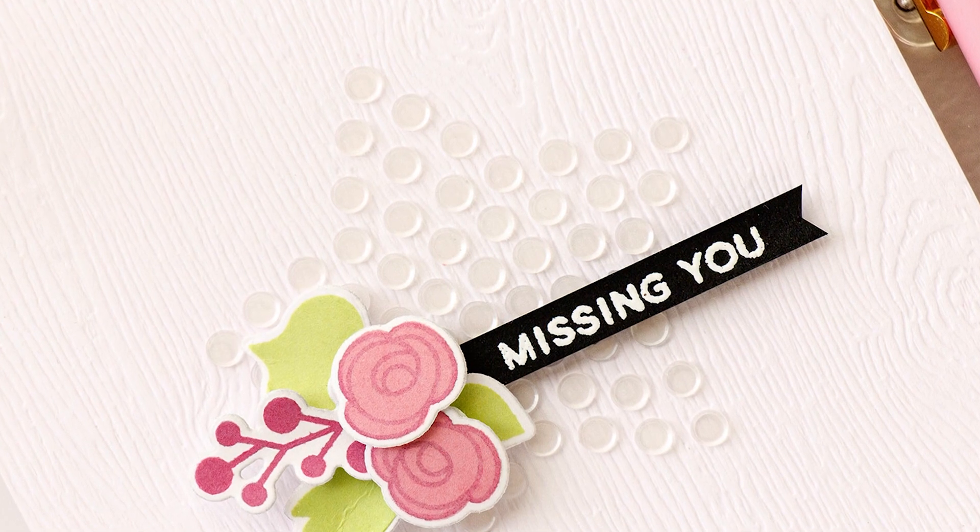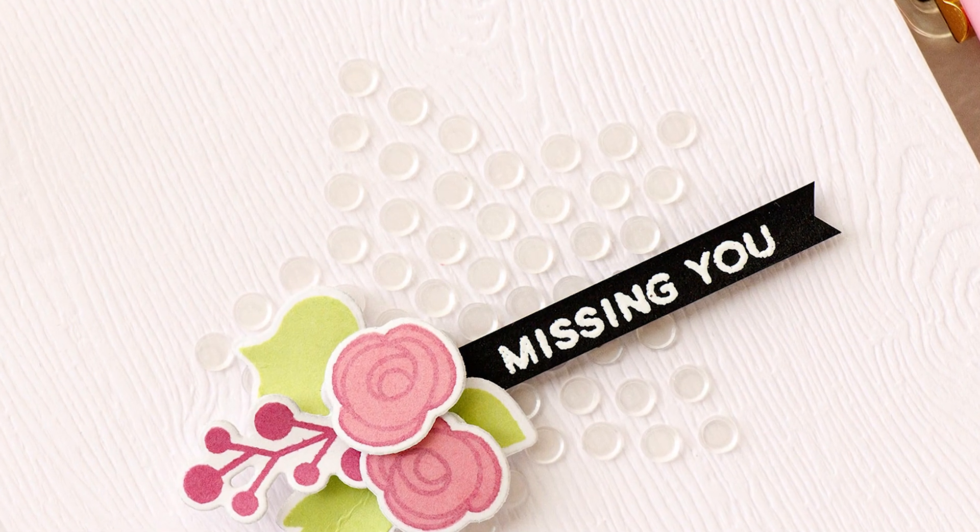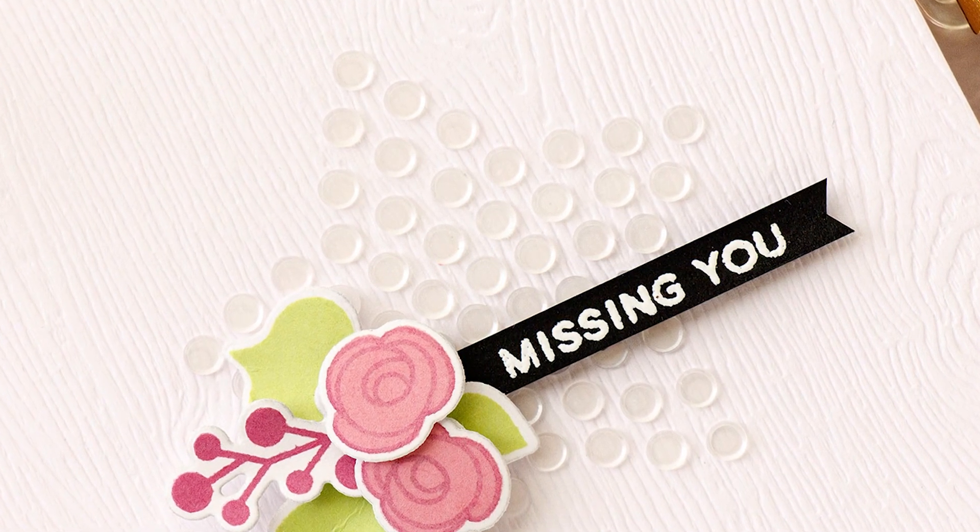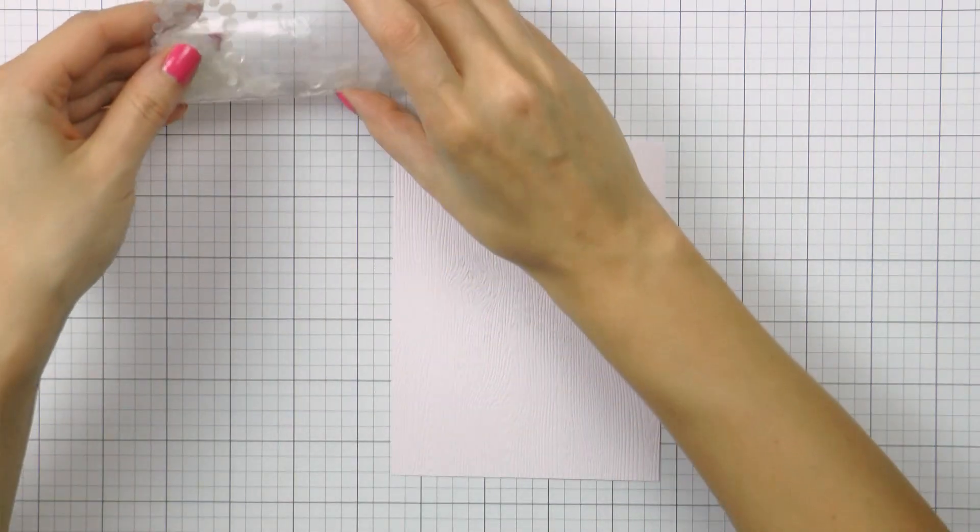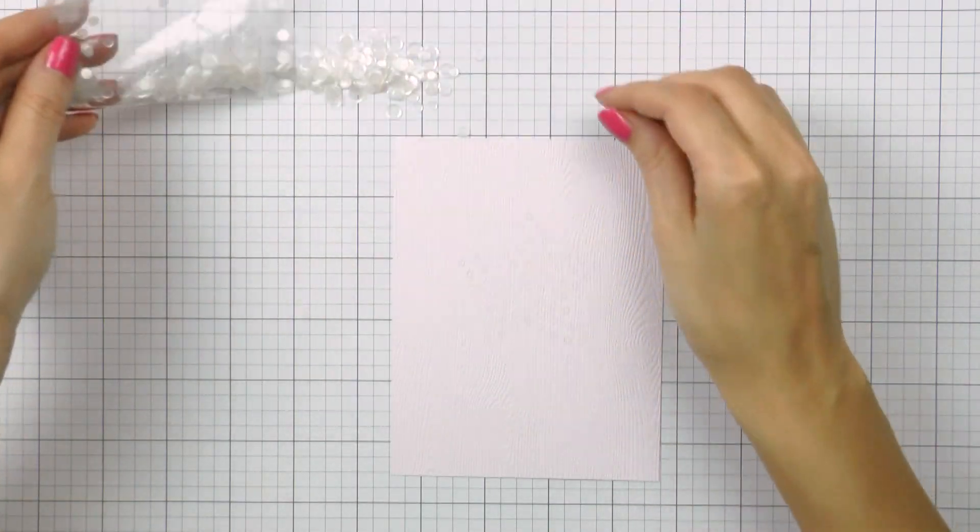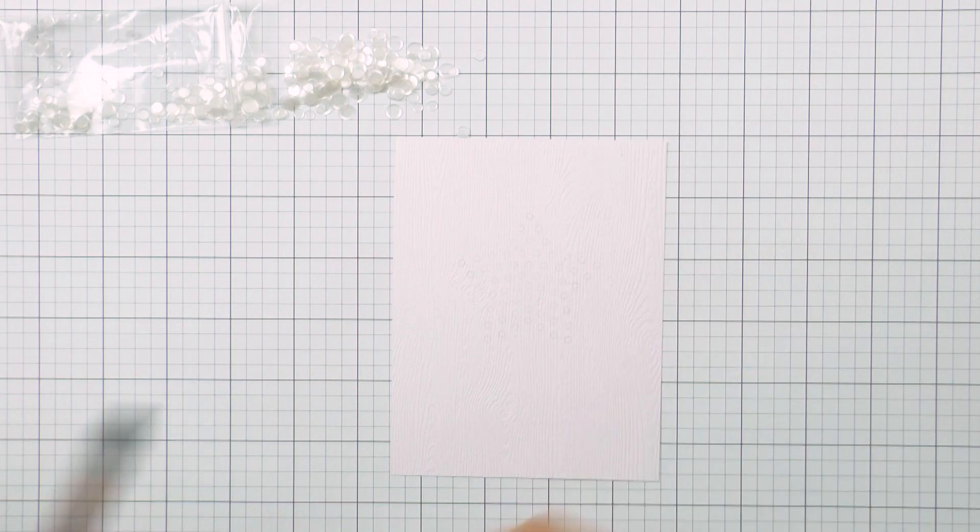If you stamp onto colored cardstock, you can also use a watermark ink for a barely visible impression. Here I've stamped this star and you can barely see it on my paper. It's visible enough for me to align and adhere my embellishments, yet it won't be visible through the embellishments.